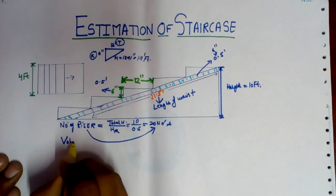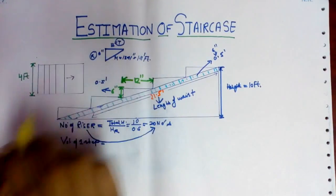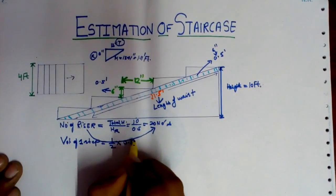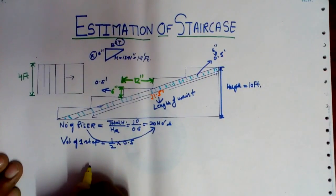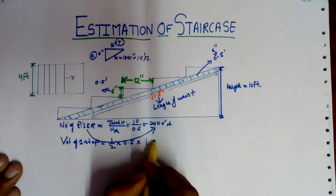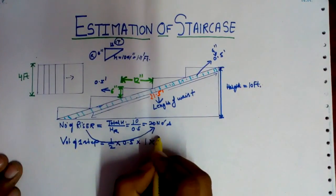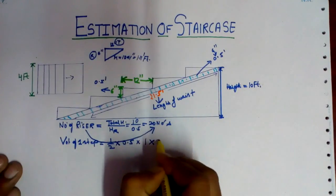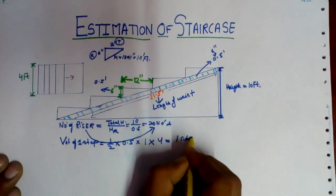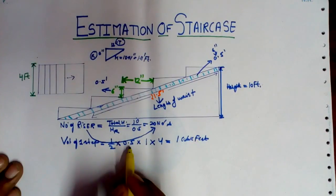Now we have to calculate the volume of one step. The formula is half into base into height into width — that is 0.5 × 1 × 0.5 × 4, which is equivalent to 1 cubic foot.